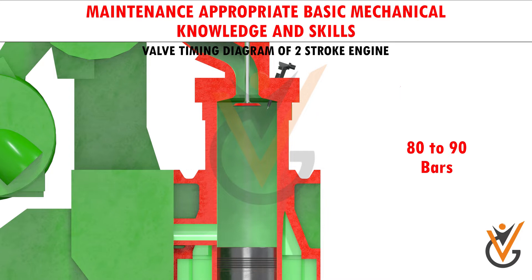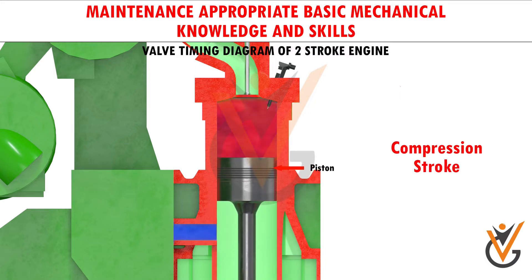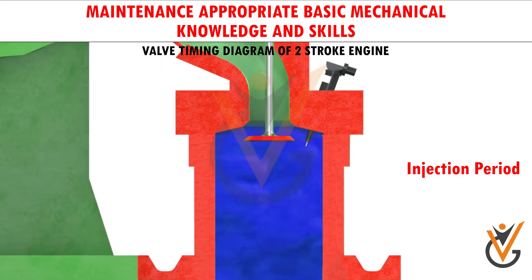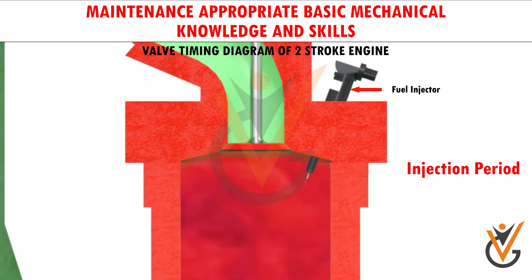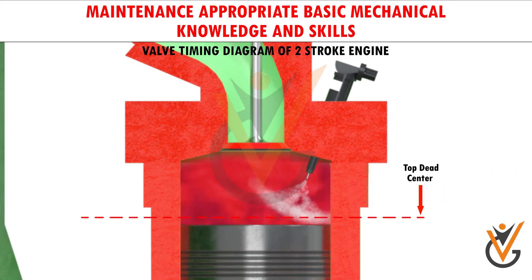At the end of the stroke, the pressure in the cylinder is in the range of about 80 to 90 bars. As the piston moves up, the air in the cylinder starts getting compressed — this is called the compression stroke. High pressure fuel oil is injected into the cylinder in the form of a fine spray before the piston reaches top dead center, which is called the injection period. The fuel is injected before top dead center to give it sufficient time to mix with air, and the fuel is ignited.